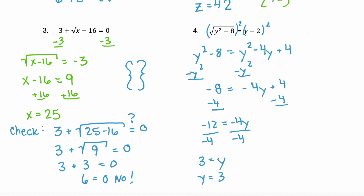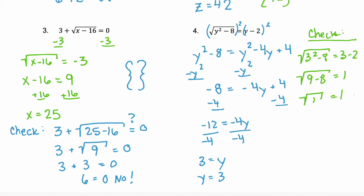We are checking: 3 squared minus 8 is equal to 3 minus 2, or 9 minus 8 equals 1. The square root of 1 equals 1 — is that true? The square root of 1 is 1, so 1 equals 1 is true. So our solution is 3. Remember, your solution set is always what you solved for — it's not what you checked.